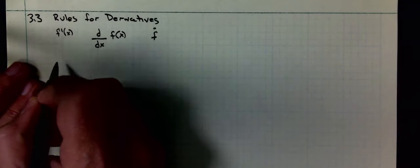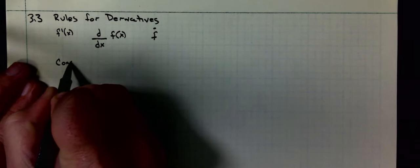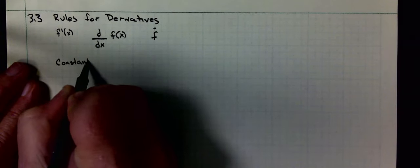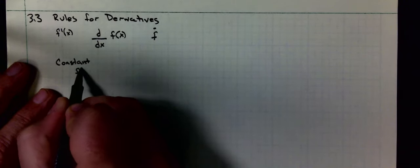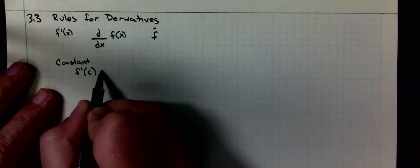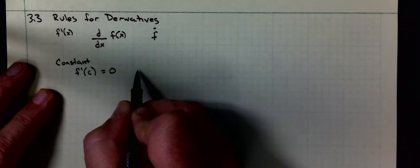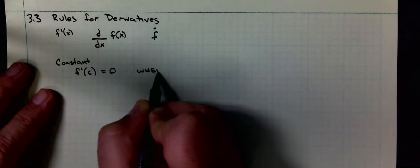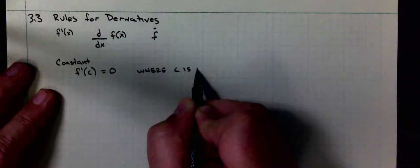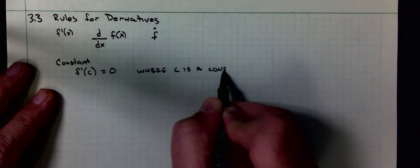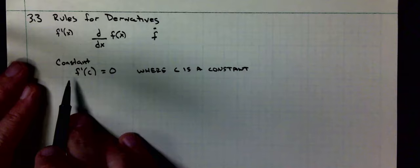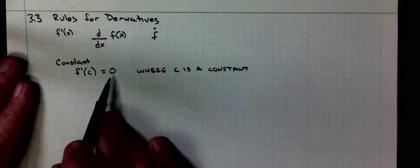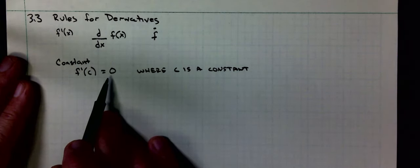The first one, for a constant, reiterated over and over: derivative of a constant, f prime of c equals zero where c is a constant. This is telling us that the slope of the graph of a constant, which is horizontal, has a slope of zero.